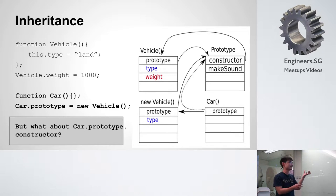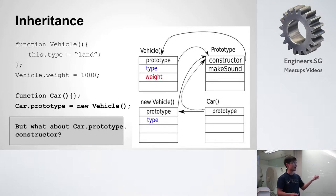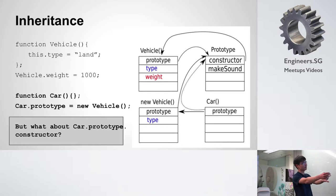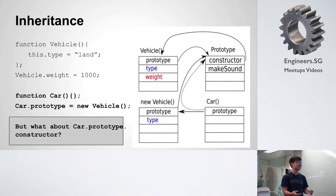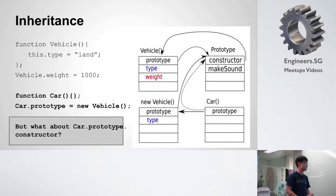Now we've added a method and a property — so how do we do inheritance? I'm going to make a new "car" function that inherits from "vehicle." The way we do that is we change the prototype: we do "car.prototype = new vehicle." So we create the car function, and get its prototype to point to a new vehicle instance. Now when we ask whether car can find "make sound," you create a new car, check if the prototype has "make sound" — it doesn't — so it follows the prototype chain and finds "make sound" in the vehicle's prototype.